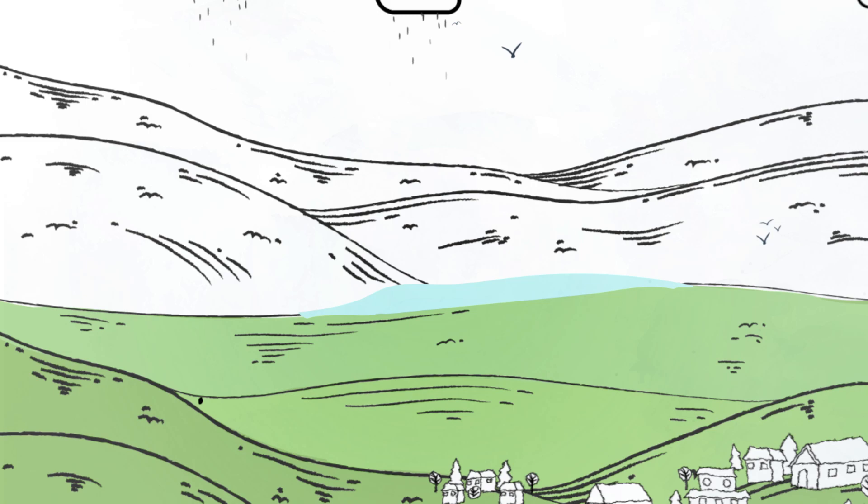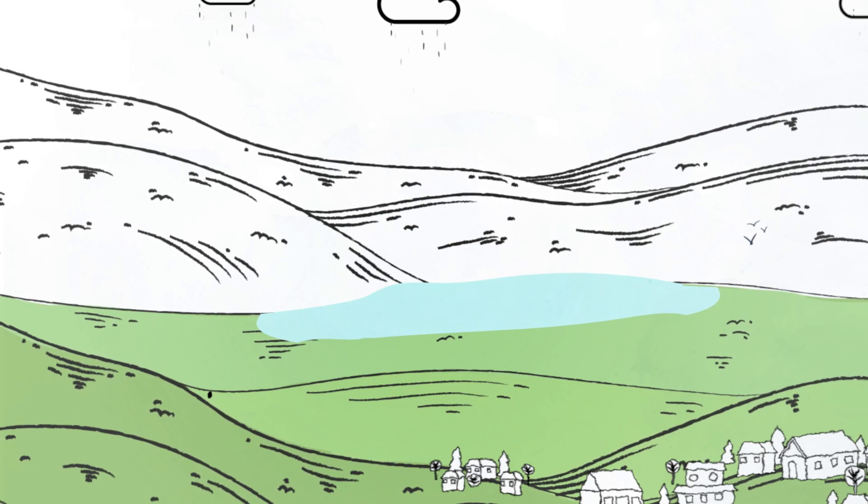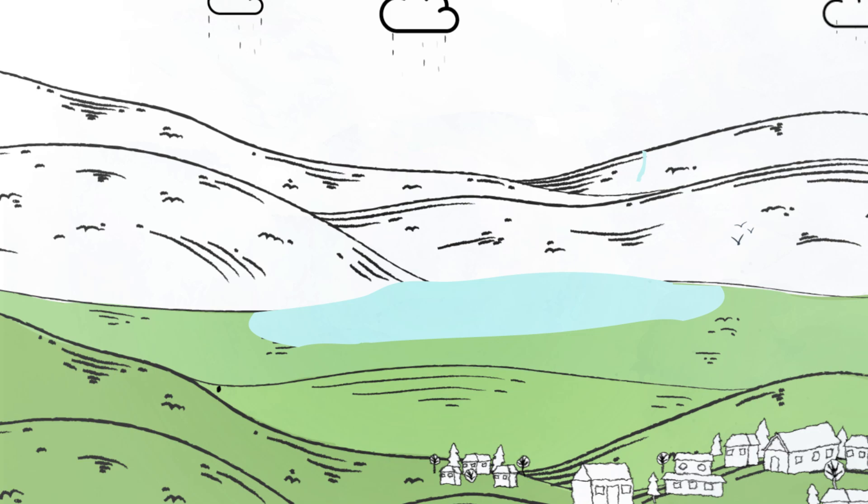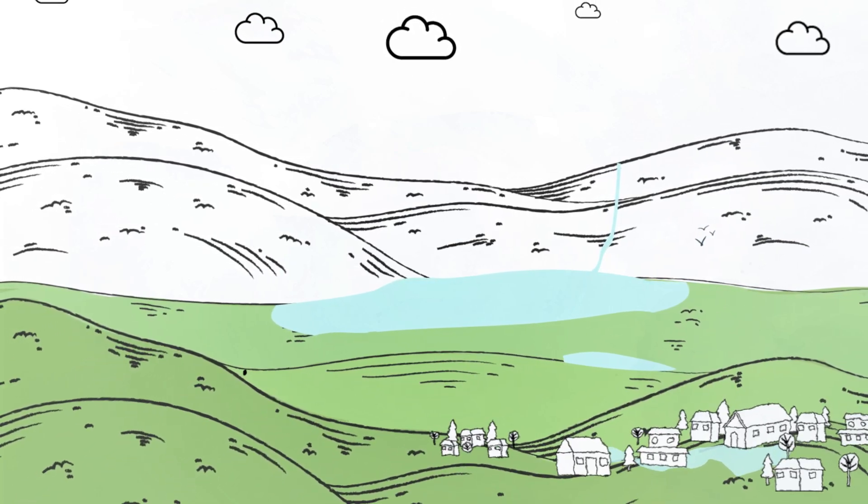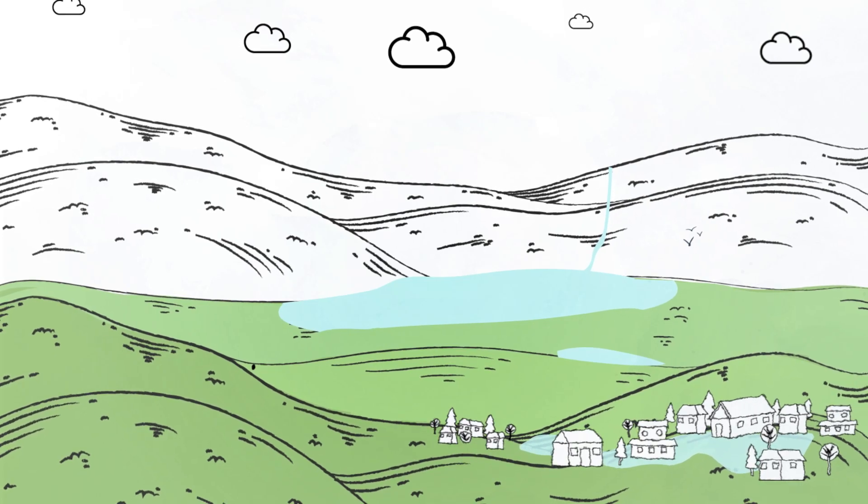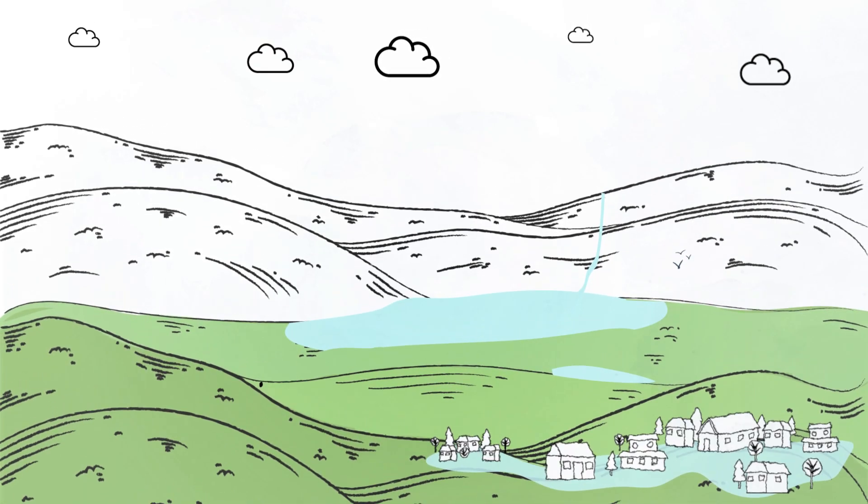But when heavy rainfall persists over weeks or months, the groundwater levels push up towards the surface. Eventually, water breaks through, flooding low land and along dry valleys into the hills. It even rises into basements and sewers in residential areas.